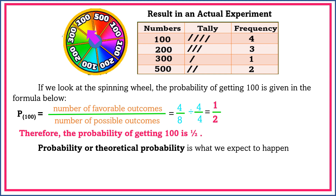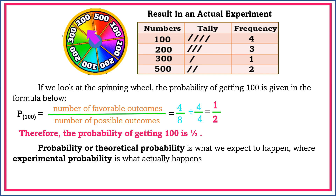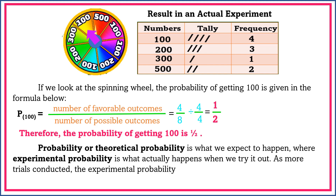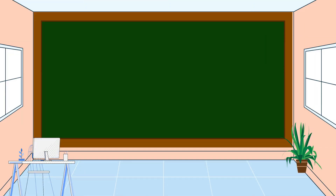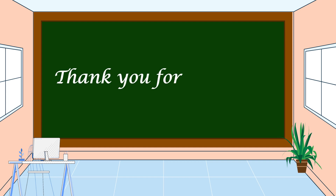Probability, or theoretical probability, is what we expect to happen, whereas experimental probability is what actually happens when we try it out. As more trials are conducted, the experimental probability generally gets closer to the theoretical probability. I hope that you understand our lesson for today — thank you for watching.